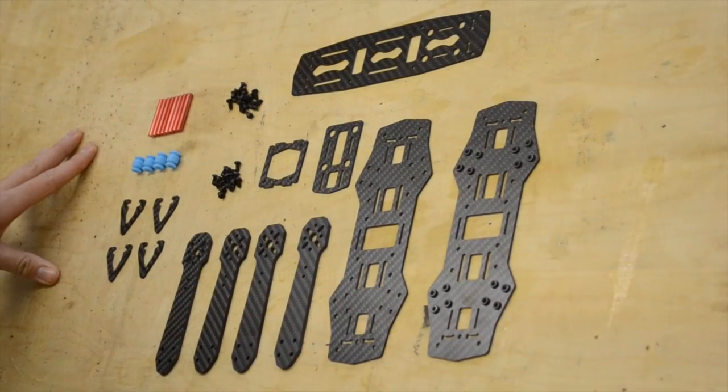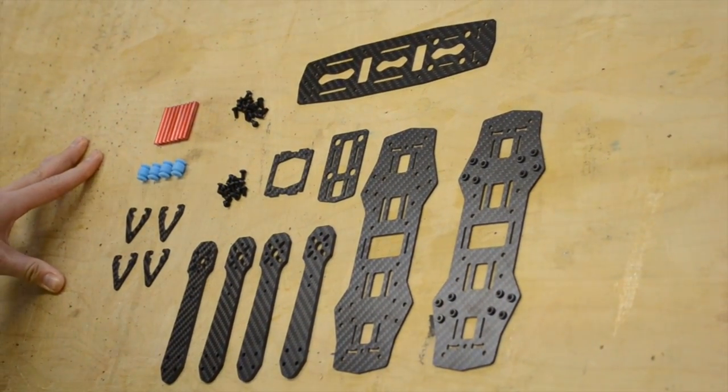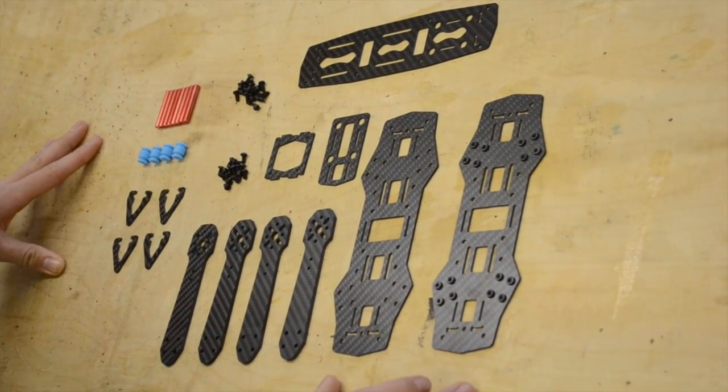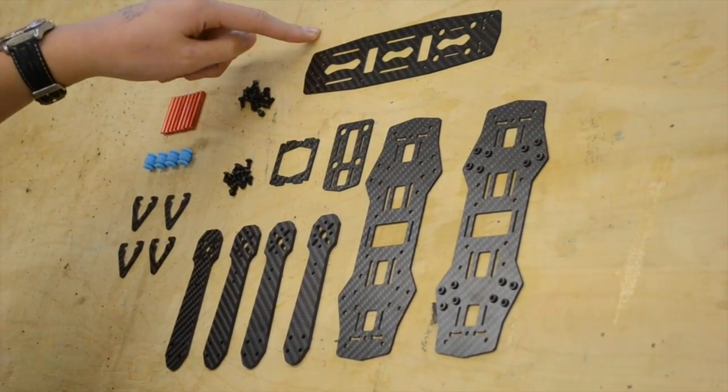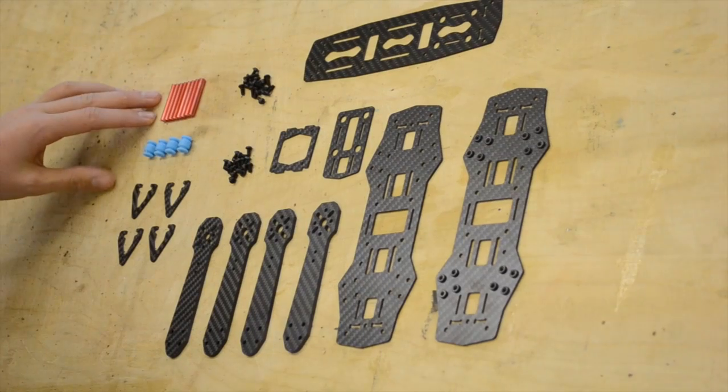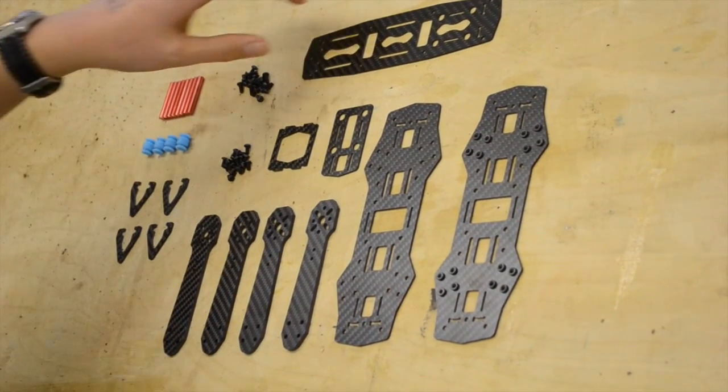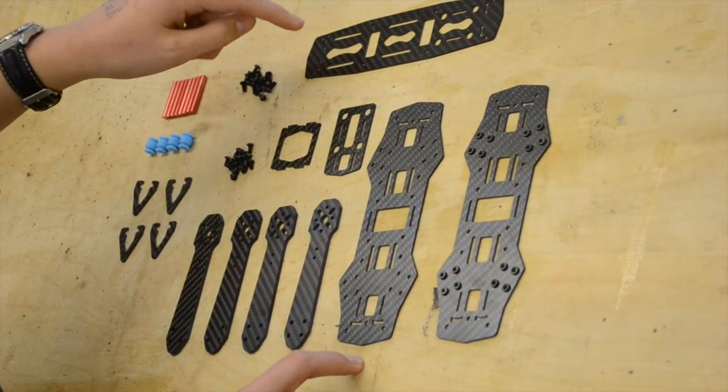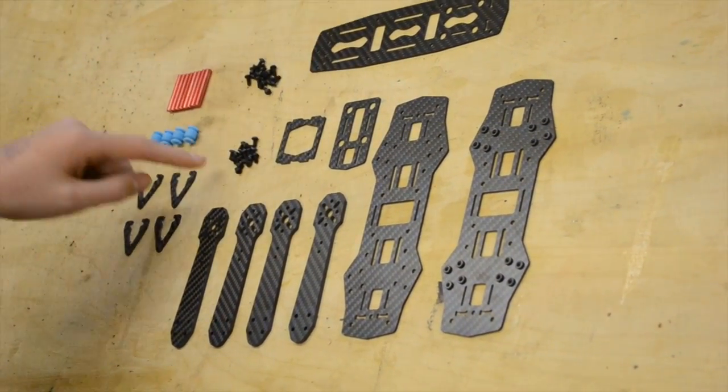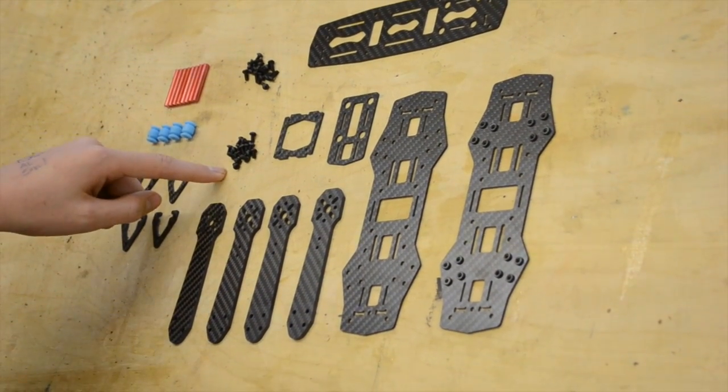These are all the pieces that come in the Hobby King set for this quad. You've got the arms here, you've got the bottom plates and the top plate. You've got 35mm standoffs here, which hold the bottom pieces and the top pieces apart. They're bolted on with these 8mm screws.